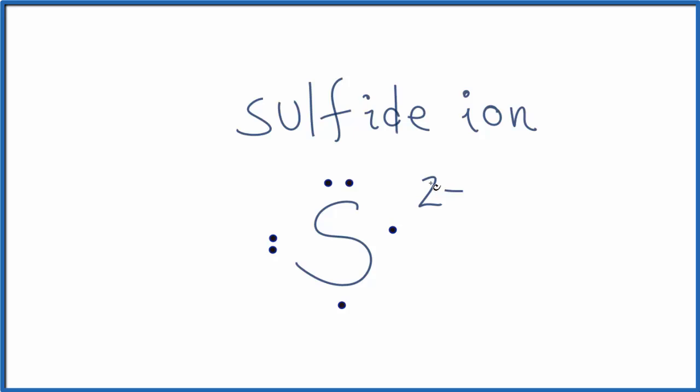So the sulfide ion, the negative 2, or the 2 minus, that means we have two additional valence electrons. Electrons are negative, and we have two negative charges. So let's add two additional electrons around the sulfur.